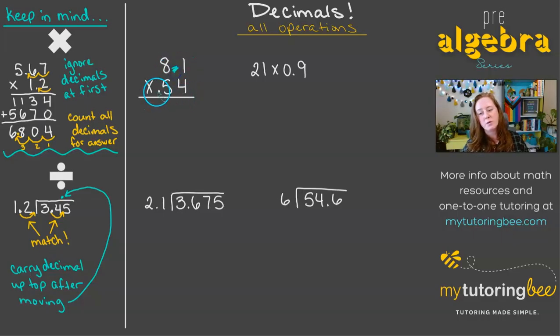So I'm just going to ignore those decimals for right now and go ahead and multiply. So 4 times 1 is 4. 4 times 8 is 32. And we're going to cross that out, drop down to 0. 5 times 1 is 5, and then 5 times 8 is 40.